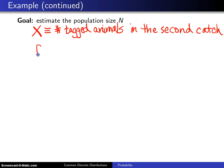And here is the probability mass function of X. In the denominator, we will have the population size capital N, and we are going to capture 30 animals from that population size.